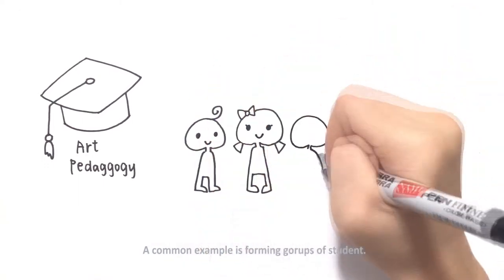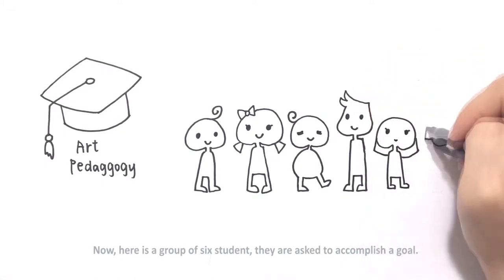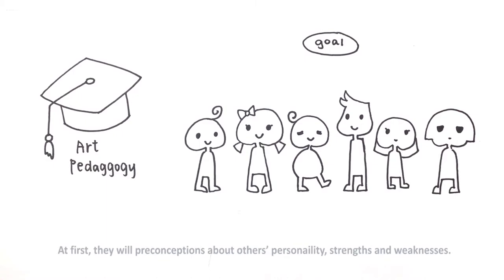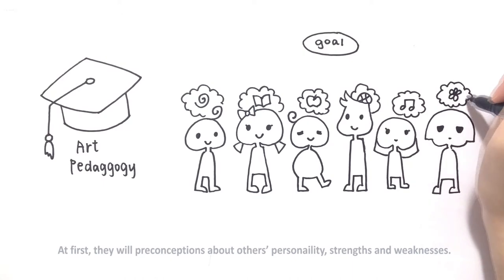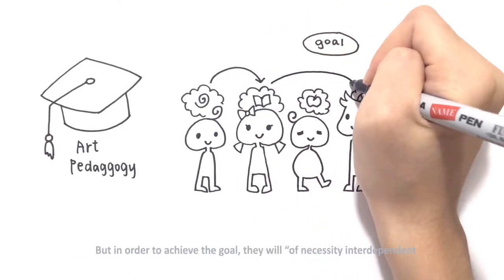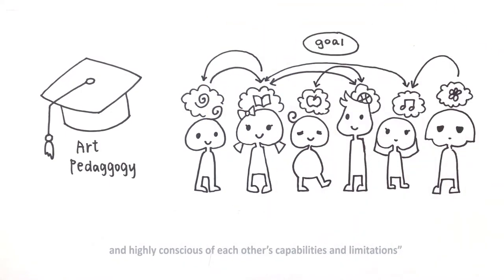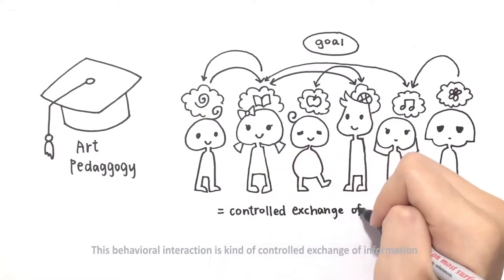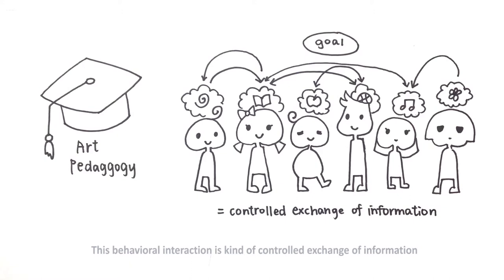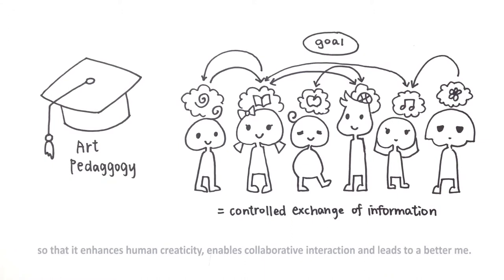The two-way conversation can apply in arts pedagogy. Cybernetics offers a clear model for reconceptualizing arts education. Arts education should be a behavioral system of feedback and control. A common example is forming groups of students. Here is a group of six students asked to complete a goal. At first, they will have preconceptions about others' personalities, strengths, and weaknesses. But in order to achieve the goal, they will often necessarily be independent and highly conscious of each other's capabilities and limitations. This behavioral interaction is a kind of controlled exchange of information that makes us observe more and communicate more, so that it enhances human creativity, enables interaction, and leads to a better self.